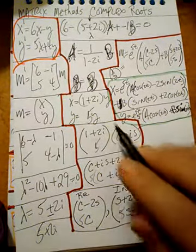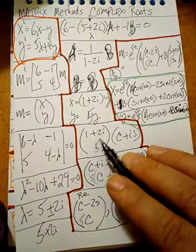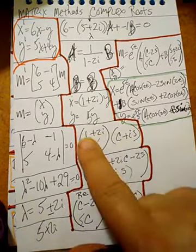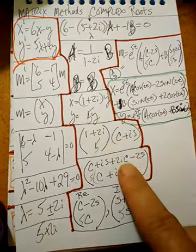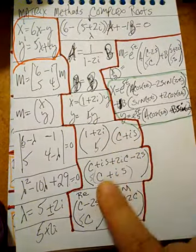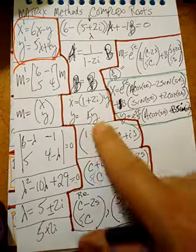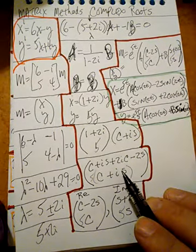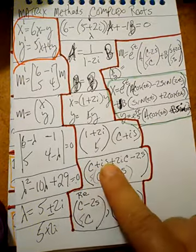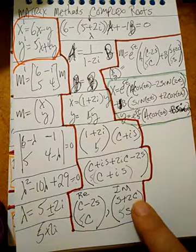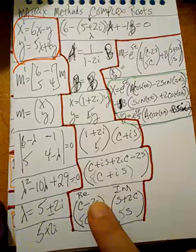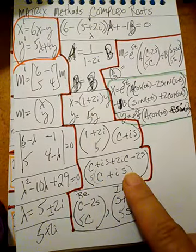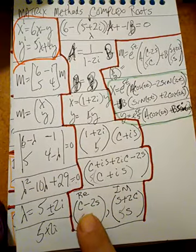Since we have imaginary lambdas, we have to do something different. We multiply by cosine plus i sine. Distributing: one times cosine, one times i sine, two i times cosine, two i times i sine — and five times cosine and five times i sine for the bottom row. This matrix multiplication gives us that combined matrix. Next, we split into real parts and imaginary parts: cosine is real, i sine is imaginary, two cosine is imaginary, negative two sine is real, five cosine is real, and five sine goes with the imaginary part. We do not include the i's — we just separate real and imaginary.